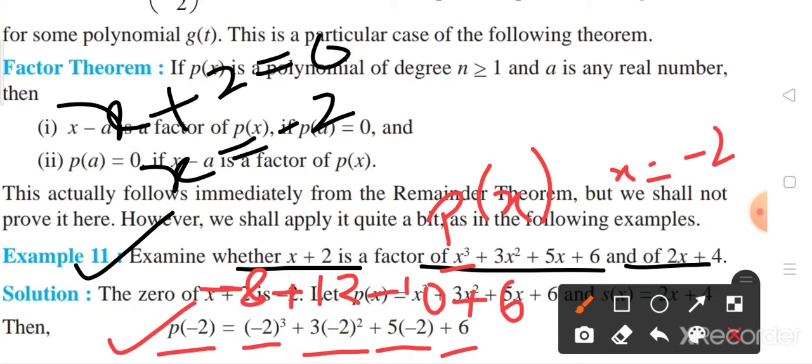Now, here the first value is minus 8. If we add them, there are two terms which are minus, so we get minus 18, and plus 18. So, the total is 0. That means we can say that x plus 2 is the factor of the polynomial p(x), that is x³ plus 3x² plus 5x plus 6.